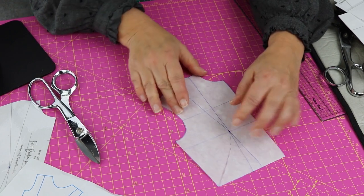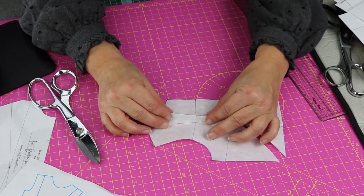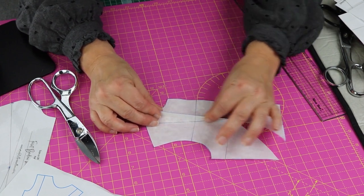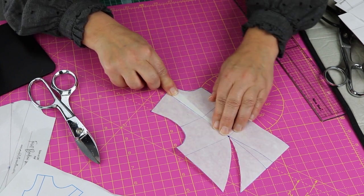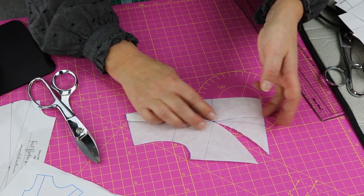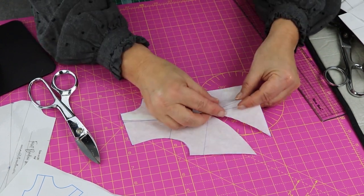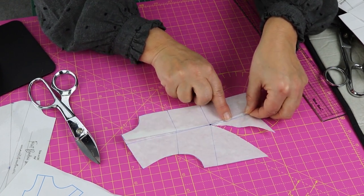The easiest way to fold these darts in is to crease them along the dart leg and just fold them so that the bulk of the dart goes towards the centre front. So crease and fold in.